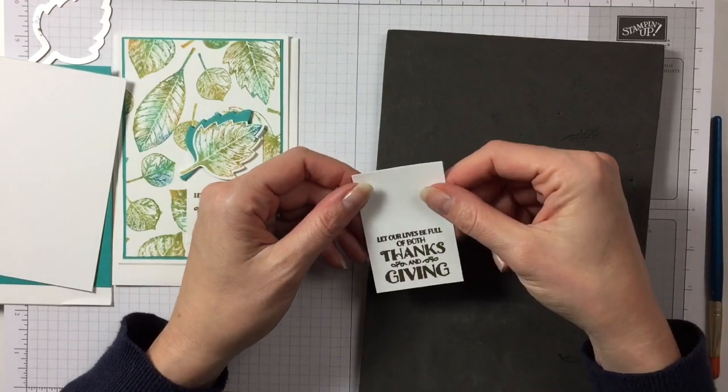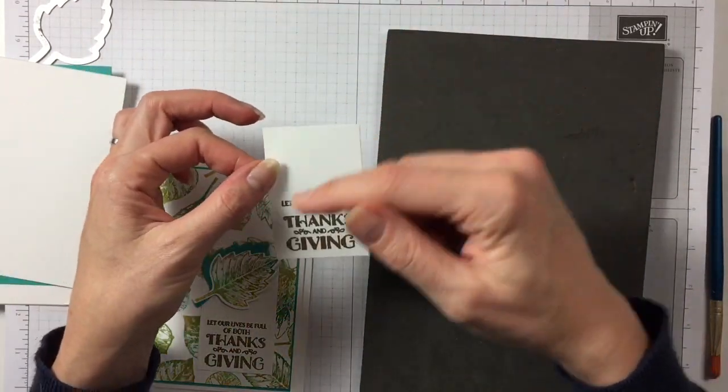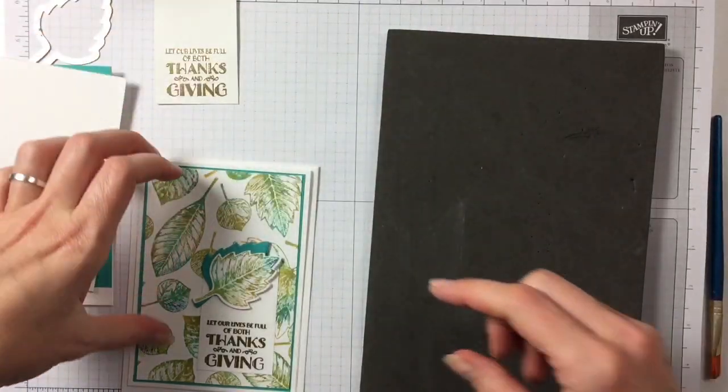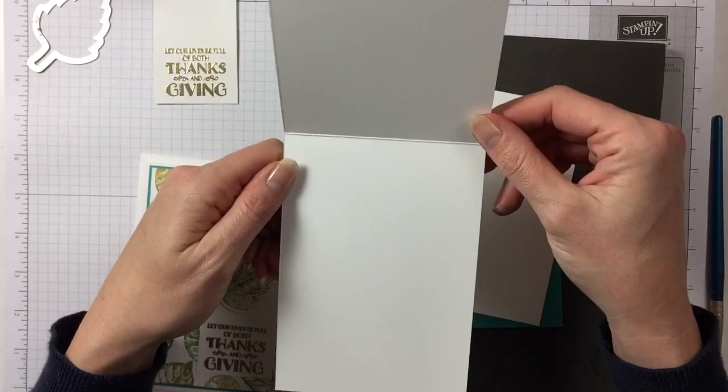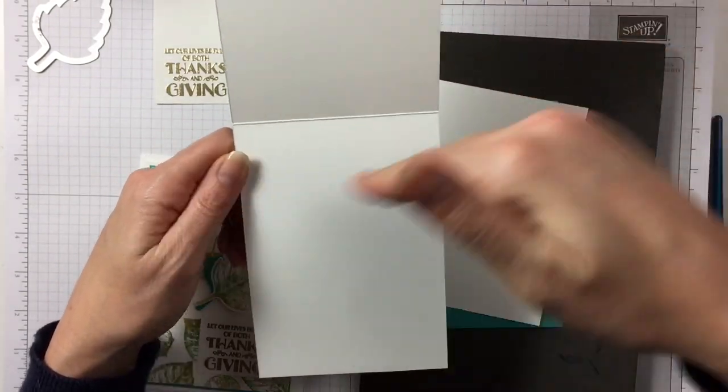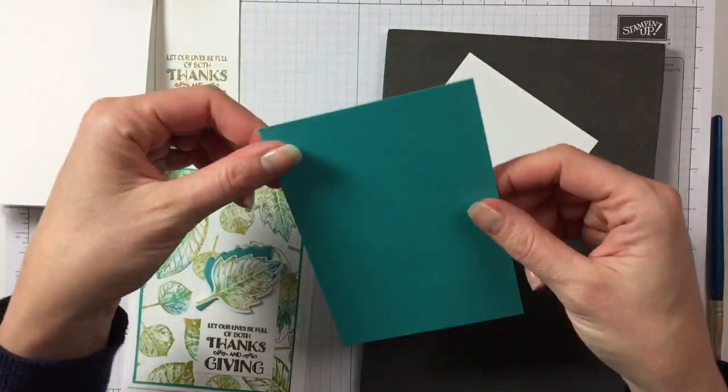So here we go. That's embossed. So that's ready to be used. This card is two inches by three inches. The basic card is the thicker white cardstock. It's the A4 cut in half scored in half. And then we have Bermuda Bay.